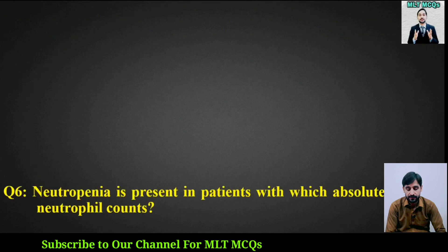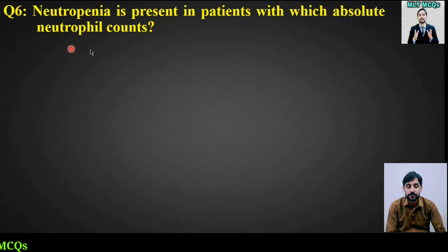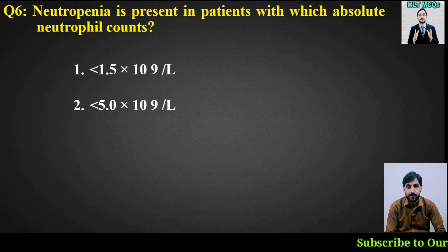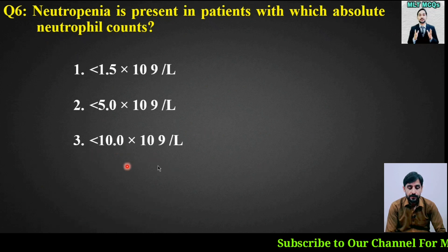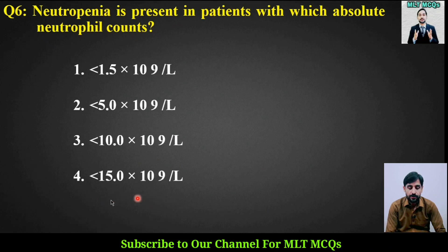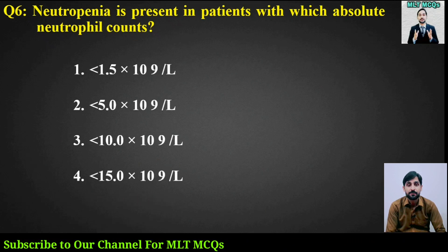MCQ number 6: Neutropenia is present in a patient with which absolute neutrophil count? Options are: less than 1.5 × 10⁹ per litre, less than 5 × 10⁹ per litre, less than 10 × 10⁹ per litre, or less than 15 × 10⁹ per litre.